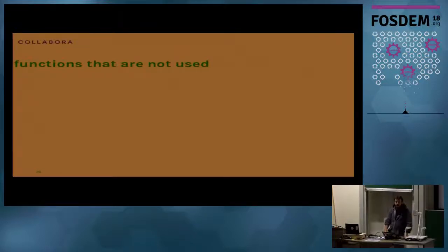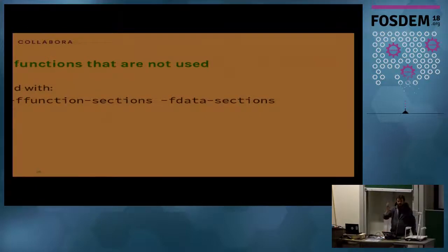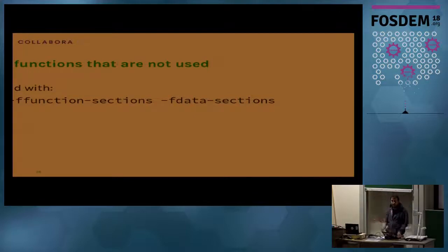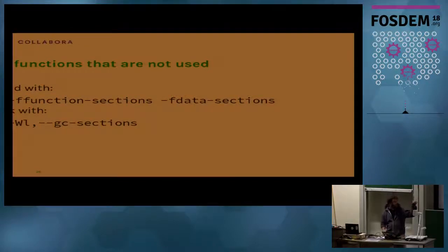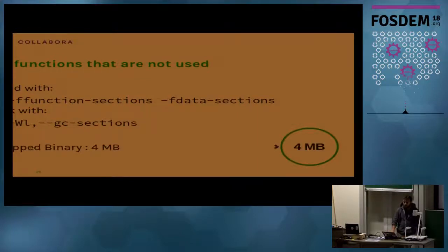Next step is to strip all functions that are not needed. We build everything with -ffunction-sections and -fdata-sections, which creates one object file per function and per data object. This means we can link exactly the ones we need and none that aren't used. Then we pass --gc-sections to the linker, which removes all objects not actually called anywhere. That brings it down to four megabytes.